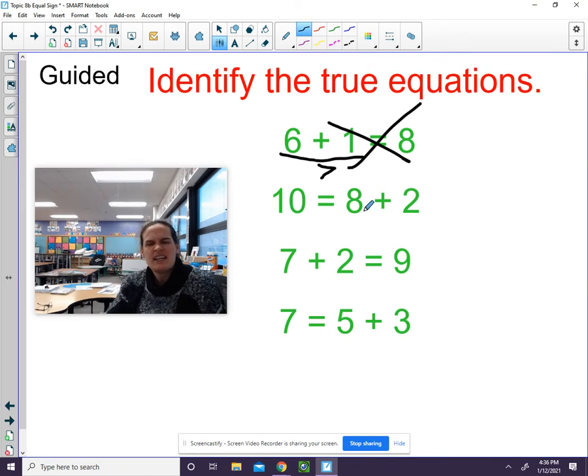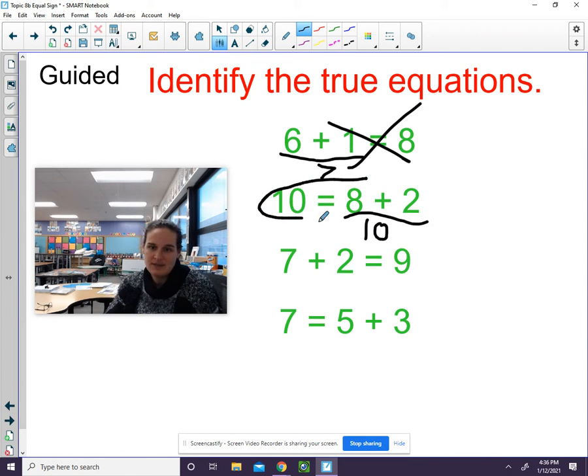Next one. Ten equals eight plus two. Step one, what part do you add? Right there. Step two, add it. Did you get ten? Step three, decide if it's true or false. Does ten equal ten? That is true. Ten is the same as ten.